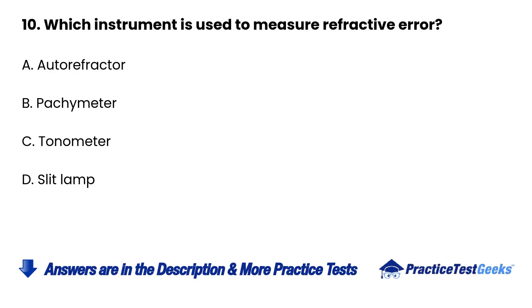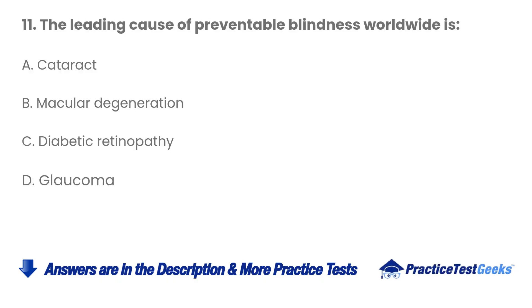10. Which instrument is used to measure refractive error? A. Autorefractor B. Pachymeter C. Tonometer D. Slit lamp